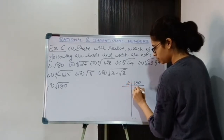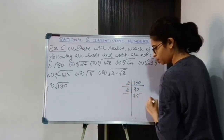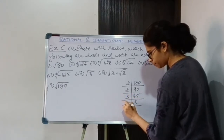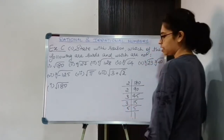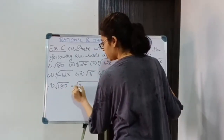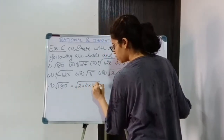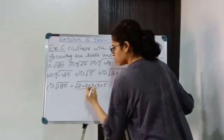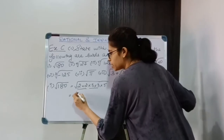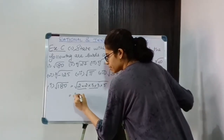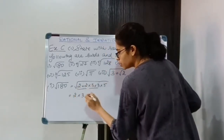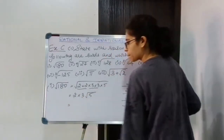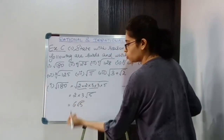Factorizing 180: 2 into 90, 2 into 45, 3 into 15, 3 into 5, and 5 into 1. So the factors are 2 × 2 × 3 × 3 × 5. Since I have square root, I can take the pairs outside. So it is going to be 6√5.